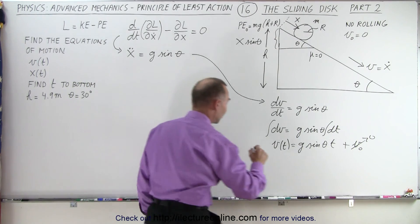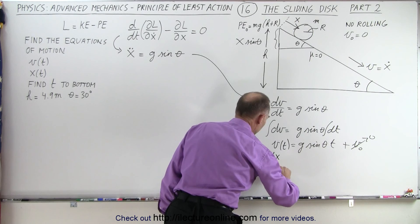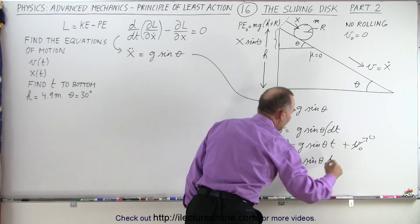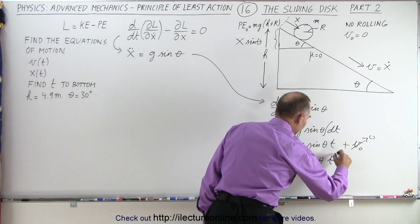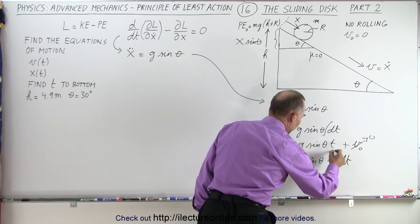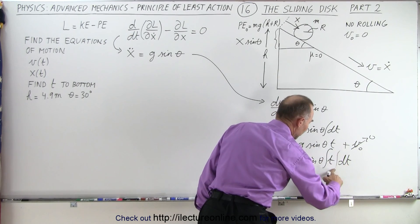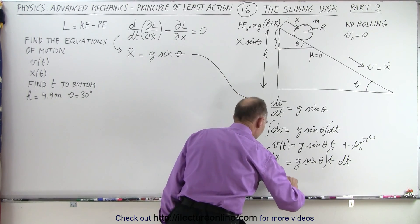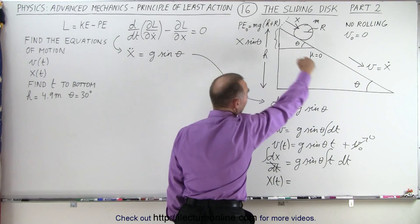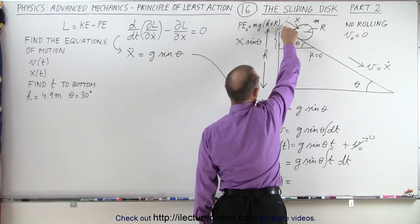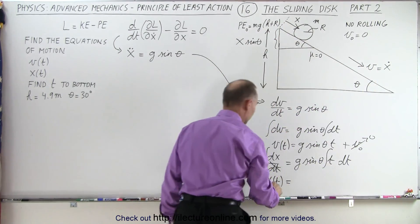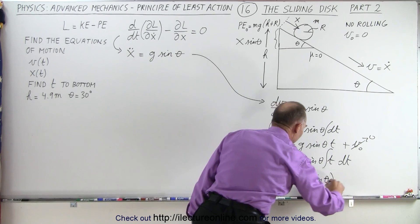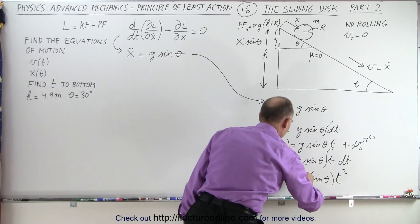Now we can say that v equals dx/dt, and that is equal to g·sine(θ)·t. We bring dt over to the other side and integrate both sides across t and dx. So now we can say that x as a function of time — remember x is the distance along the incline, with x equals zero at the top increasing as it goes down — will be equal to g·sine(θ)·t² divided by two.